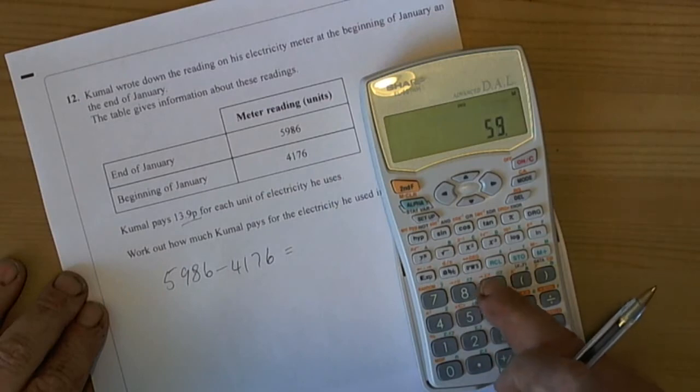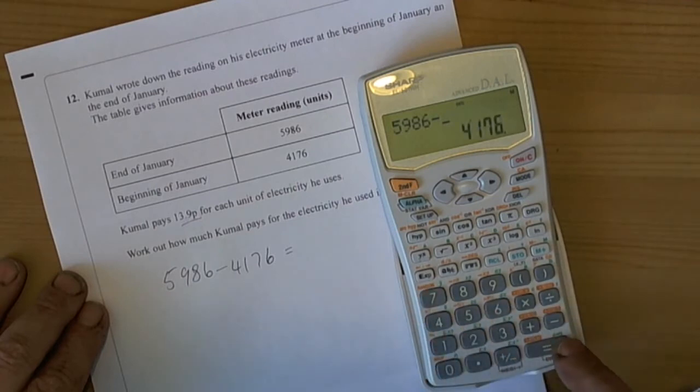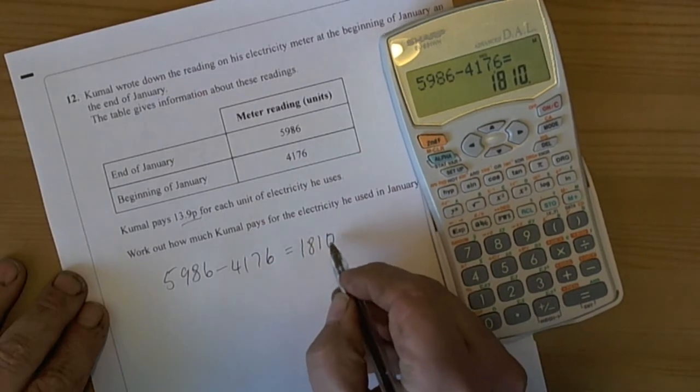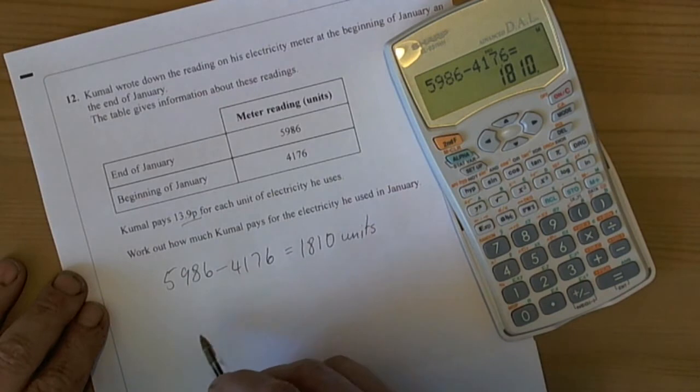5,986 take away 4,176 equals 1,810 units. So we have used 1,810 units—that gets us one method mark. Now we need to work out the cost itself.